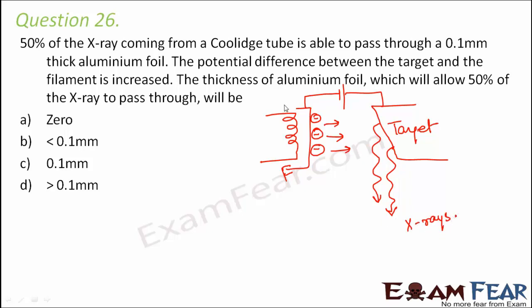In this question, it is told that the potential difference between the target and the filament is increased. When the potential difference increases, the kinetic energy of the electrons hitting the target also increases. The electrons enter the target material and gradually lose kinetic energy, coming to rest. When the kinetic energy is higher, the electrons will travel a greater distance before coming to rest, so the thickness of the target material effectively increases.